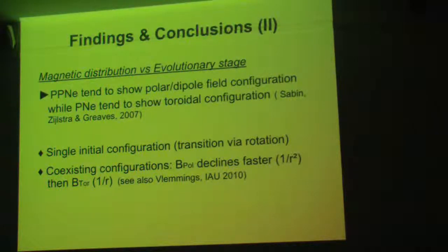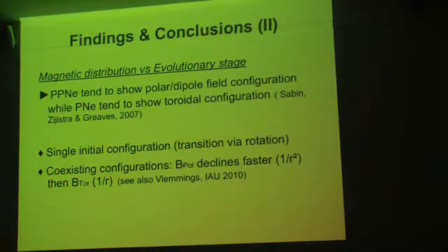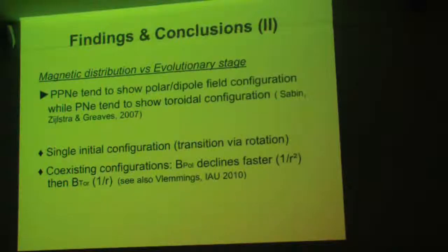The two hypotheses are the following. Either we have a single configuration at the beginning — at the protoplanetary phase you have a polar configuration — and with time, including rotation, you have a transition to a toroidal configuration. Or, we have at the beginning a coexisting configuration: not only a poloidal field but a poloidal and a toroidal field together. At that time the poloidal field dominates. But as the poloidal field declines much quicker than a toroidal field — a poloidal configuration declines as 1/r², while a toroidal one declines as 1/r — naturally in the end you have the domination of a toroidal configuration when you reach the planetary nebula phase.